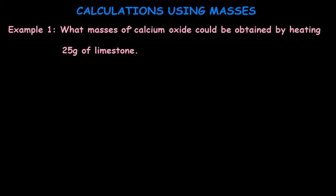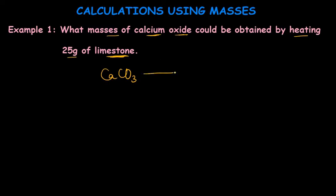Now let's see some calculations using masses. The first example asks: what mass of calcium oxide could be obtained by heating 25 grams of limestone? Limestone is calcium carbonate, CaCO₃. Heating calcium carbonate gives calcium oxide and carbon dioxide. This equation is already balanced — the number of calcium, carbon, and oxygen atoms on both sides is the same, so no balancing is needed.